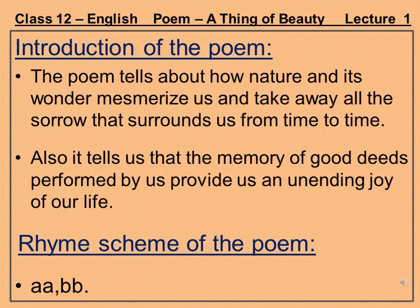The main theme of the poem: 'A Thing of Beauty' tells us about how nature and its wonders mesmerize us and take away all the sorrow that surrounds us from time to time. The poet John Keats tells us that the memory of our good deeds, which we perform in our human form, are always an unending joy of our life — a thing of beauty is a joy forever. The deeds we perform in our day-to-day life become an unending joy, and their loveliness keeps on improving and increasing every day.